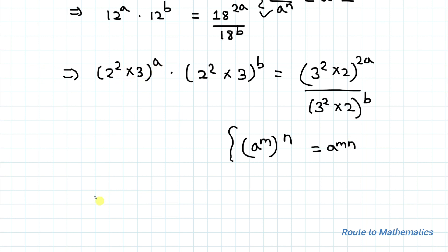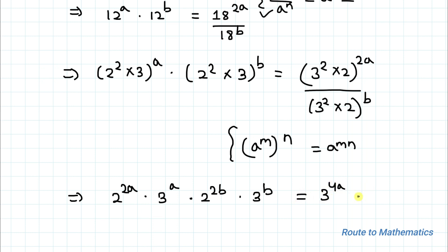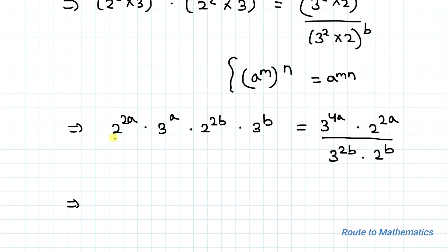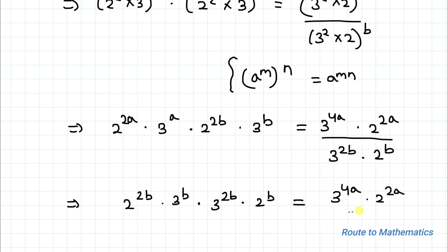Expanding using this rule, I can write: 2 to the power 2a × 3 to the power a × 2 to the power b × 3 to the power b equals 3 to the power 4a × 2 to the power 2a, divided by 3 to the power 2b × 2 to the power b. In the next step I will take all bases with power a to the right-hand side and all bases with power b to the left-hand side.